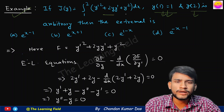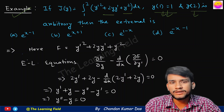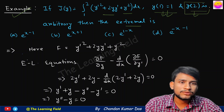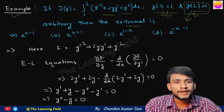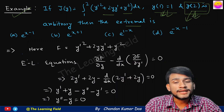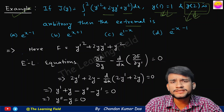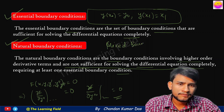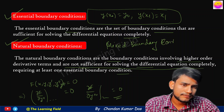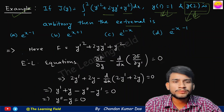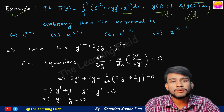Now let's take an example: J[y] = integral from 1 to 2 of (y'² + 2yy' + y²) dx, with y(1) = 1 and y(2) arbitrary. This is a CSIR NET 2016 question with four options. Since y(2) is arbitrary, x = 2 is the free end — that is the natural boundary condition. x = 1 is fixed — that is the essential boundary condition. Since one end is fixed and one is free, this is also called a mixed type problem, involving mixed boundary conditions.